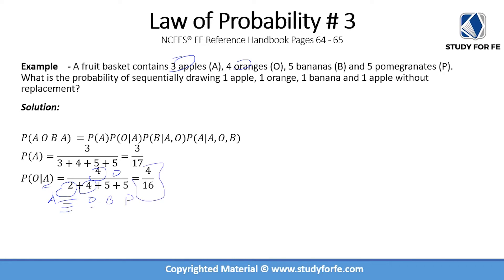How about probability of removing a banana given that an apple and orange have been removed? Number of bananas remains unchanged at five. Number of apples is two because we already removed one. Number of oranges is now three because we removed one, and pomegranates remain five. You can see that the denominator is changing continuously, which is very important.